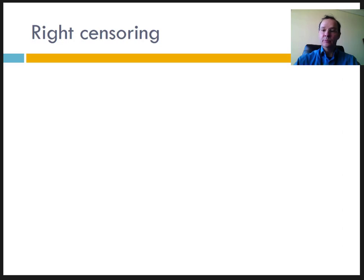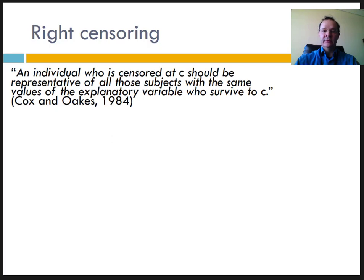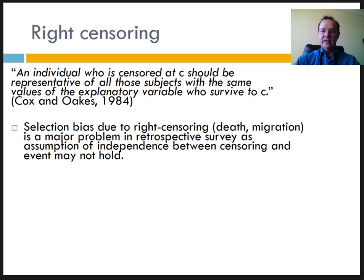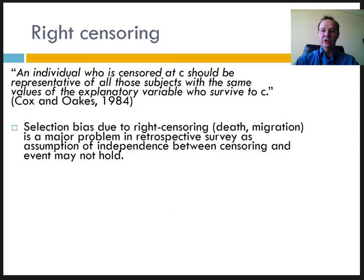Let's return to the important issue of censoring and truncation. An elementary principle of event history analysis is that censoring and an event should be independent of one another. To quote famous authors: an individual who is censored at time c should be representative of all those subjects with the same values of the explanatory variable who survived to c. In retrospective data, the study population has necessarily been selected among survivors who did not migrate at the time of the survey — creating a selection bias due to death and migration out of the study area. This is a major problem since the assumption of independence between censoring due to death or out-migration and the event of interest might not hold.